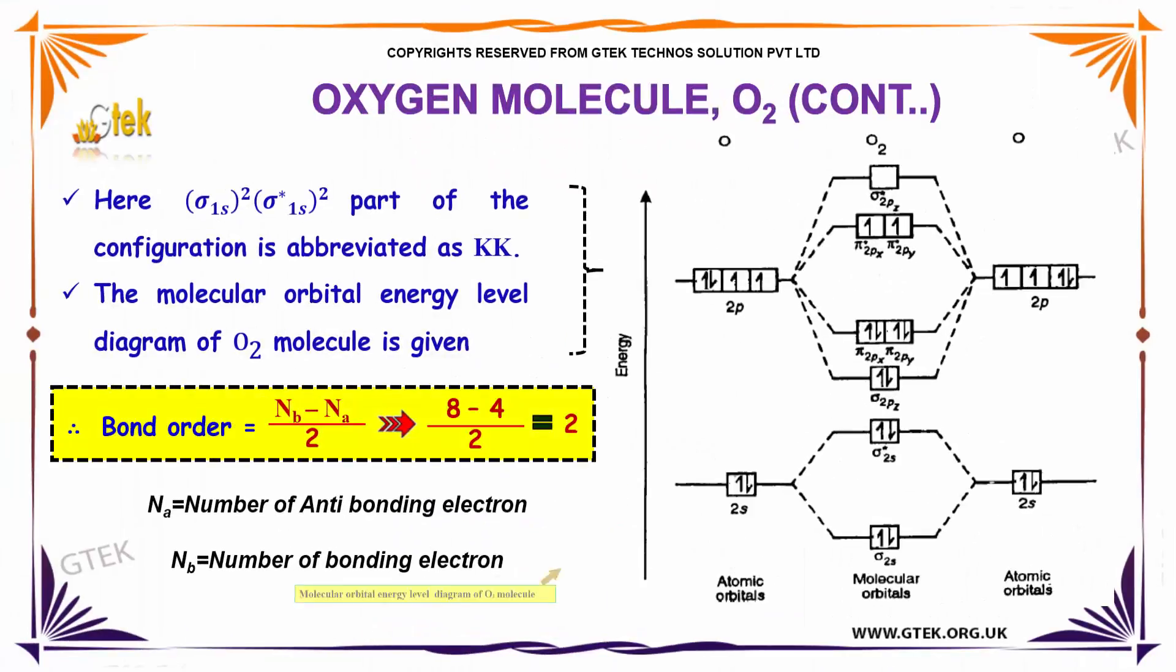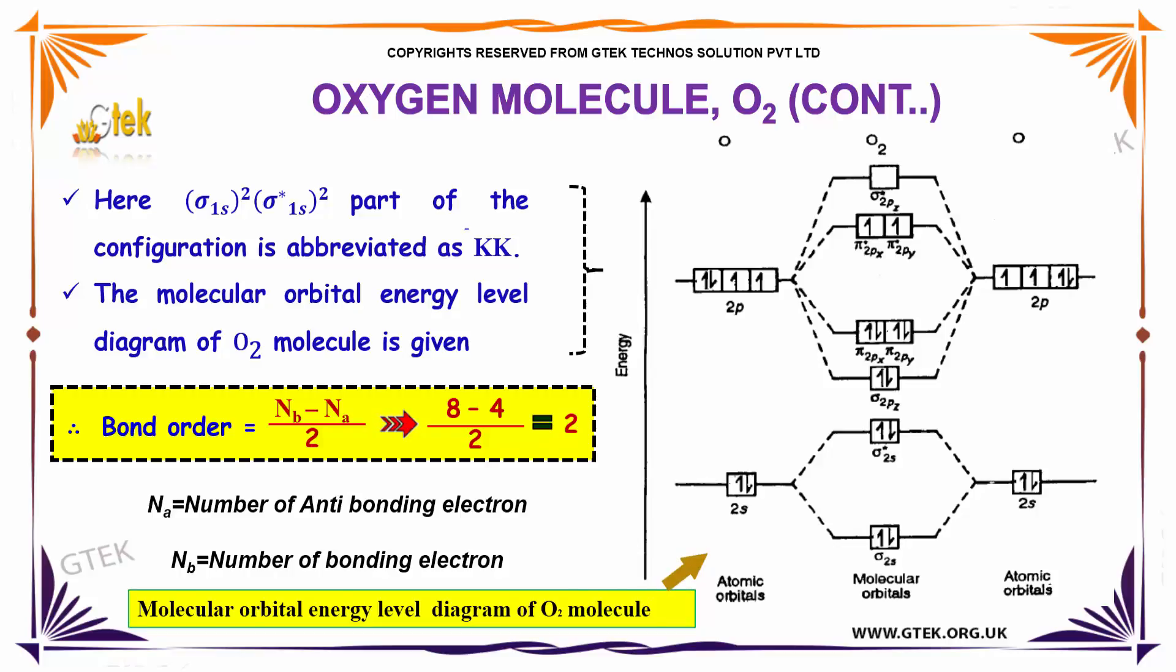Over here, sigma 1s2 and sigma star 1s2 parts of the configuration is abbreviated as KK and this can be discarded. The reason is you got 2 bonding and 2 antibonding which is cancelled.